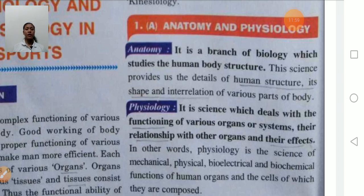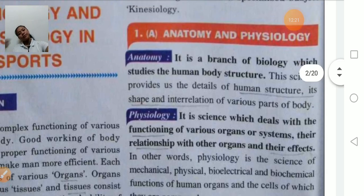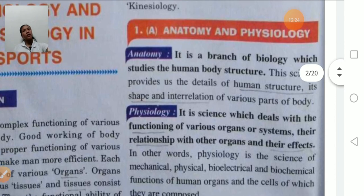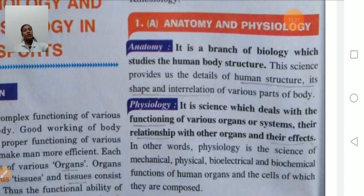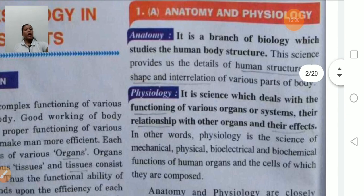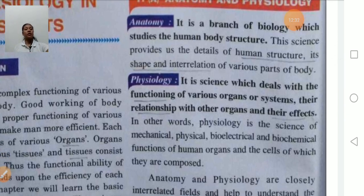In physiology, we study the functioning of various organs — how the various organs function, what their effects are, and how they are interrelated with each other. In anatomy we study the structure — shape and size — of various organs; in physiology we study the functioning of those organs.